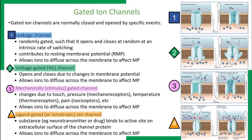The first type of gated ion channel is the leakage channel. As the name suggests, leakage channels basically leak ions — they open and close at seemingly random times, but this is intrinsically controlled. The leakage channels contribute to maintaining the resting membrane potential by allowing diffusion of ions across the membrane. When closed, ions cannot diffuse; when open, ions move from a region of high concentration to lower concentration.